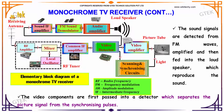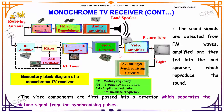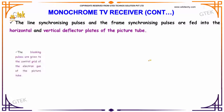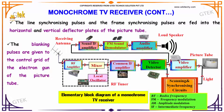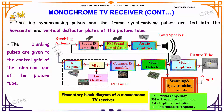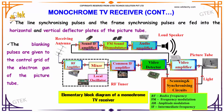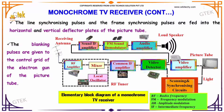The video components are first passed into a detector, which separates the picture signal from the synchronizing pulses. The line synchronizing pulses and the frame synchronizing pulses operate the horizontal and vertical deflector plates of the picture tube. The blanking pulses are given to the control grid of the electron gun of the picture tube. The line synchronizing and frame synchronization is done.